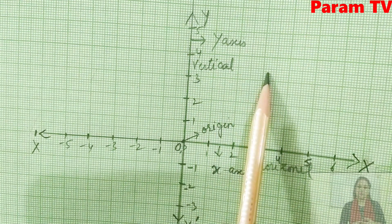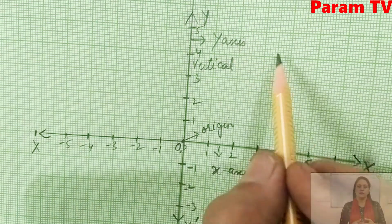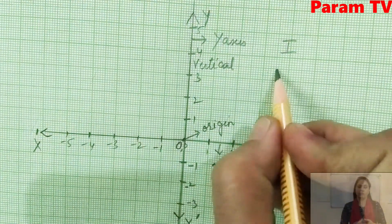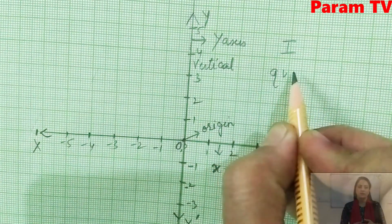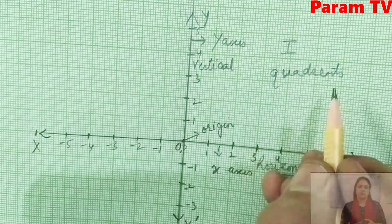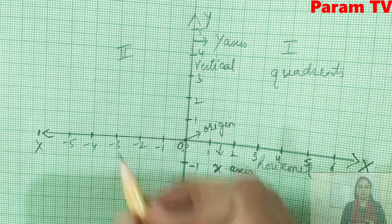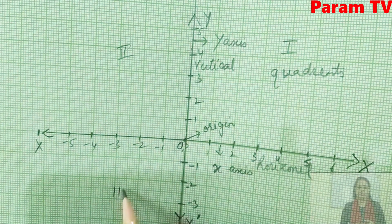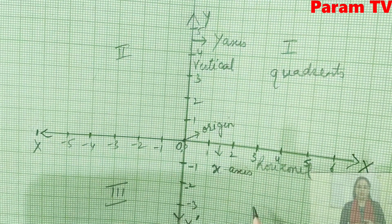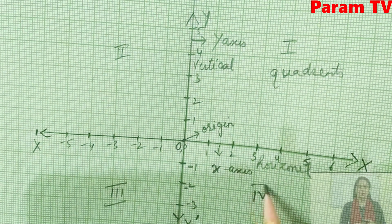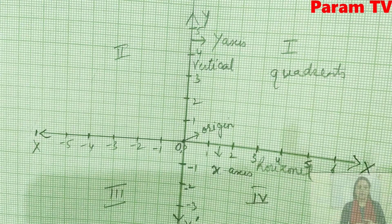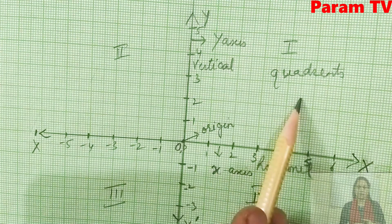Look — 1, 2, 3, 4. These are called quadrants. This is the first quadrant, this is the second quadrant, this is the third quadrant, and this is the fourth quadrant.